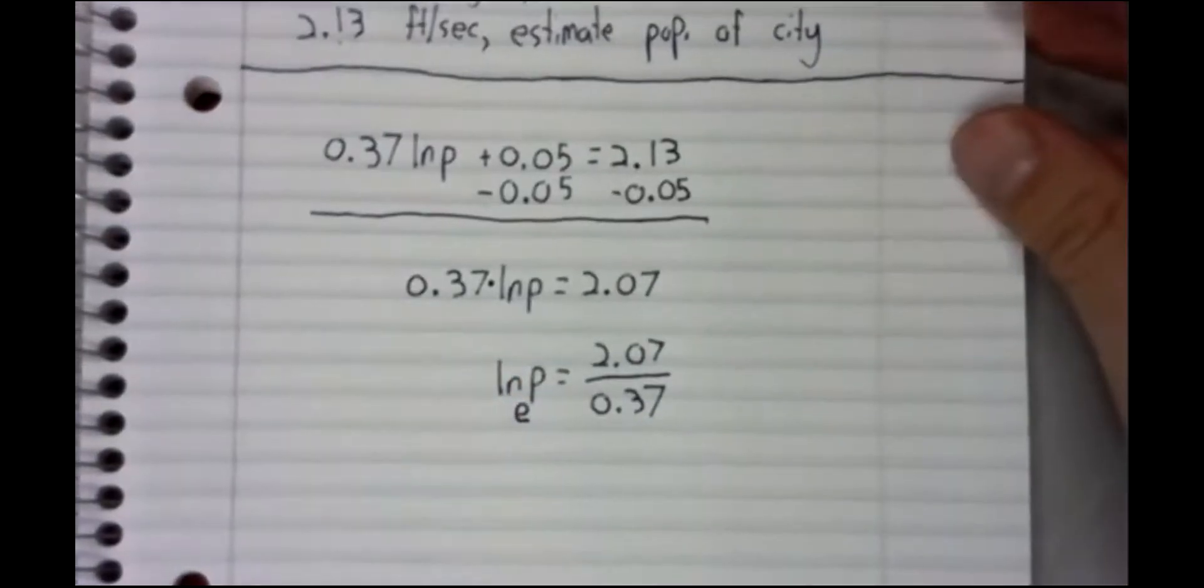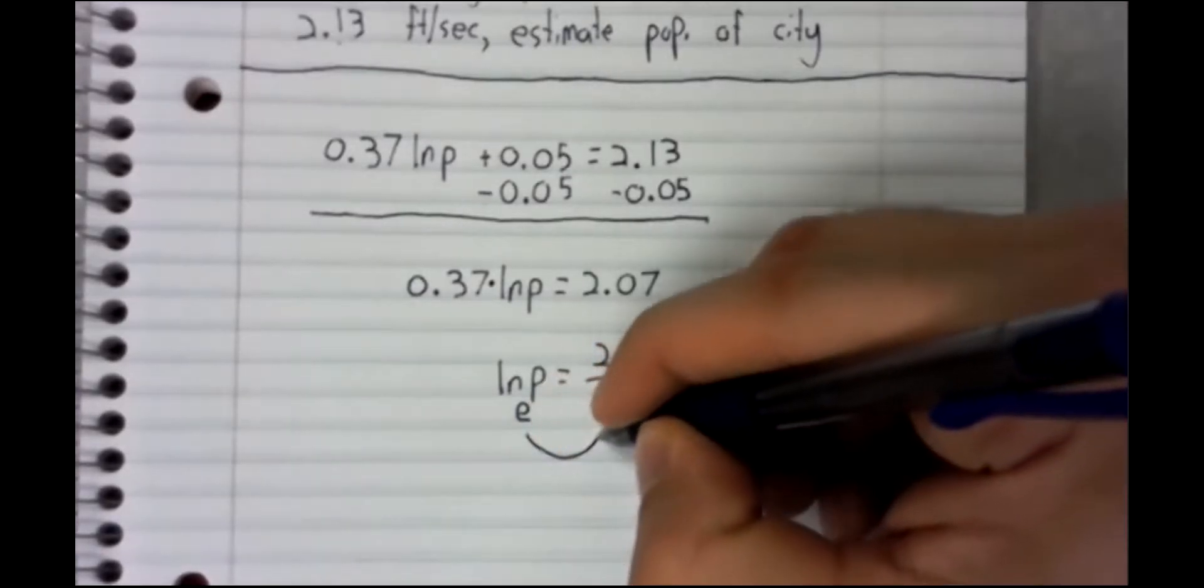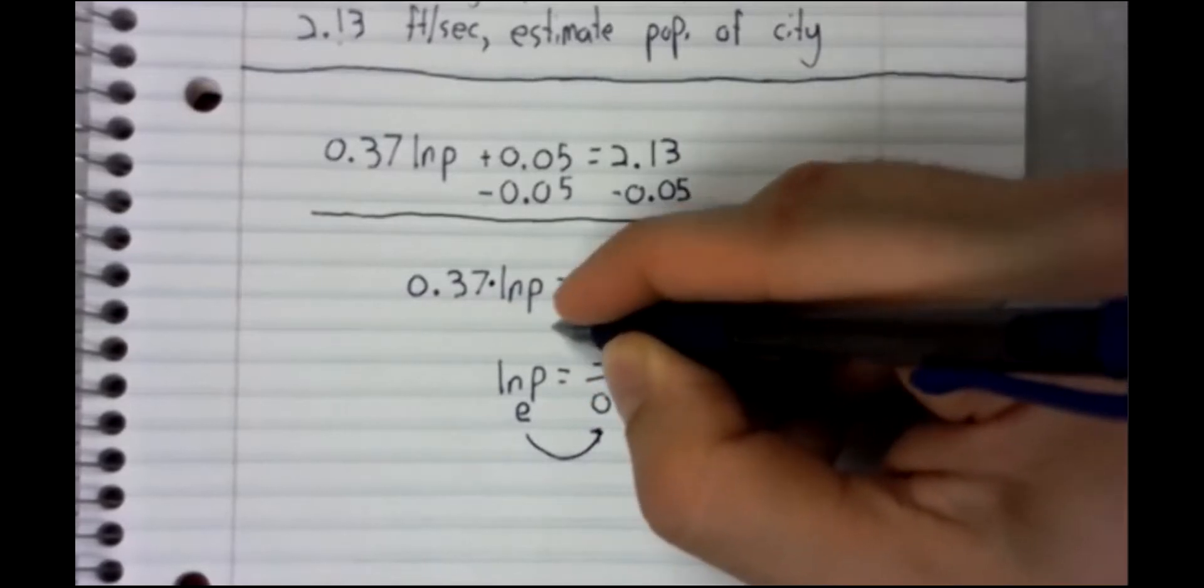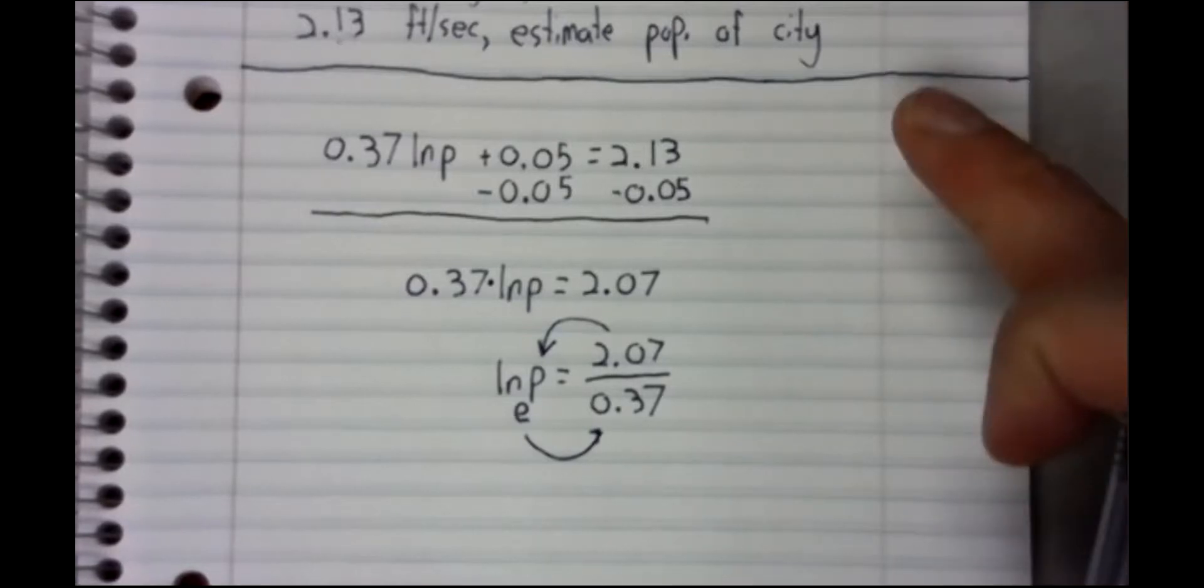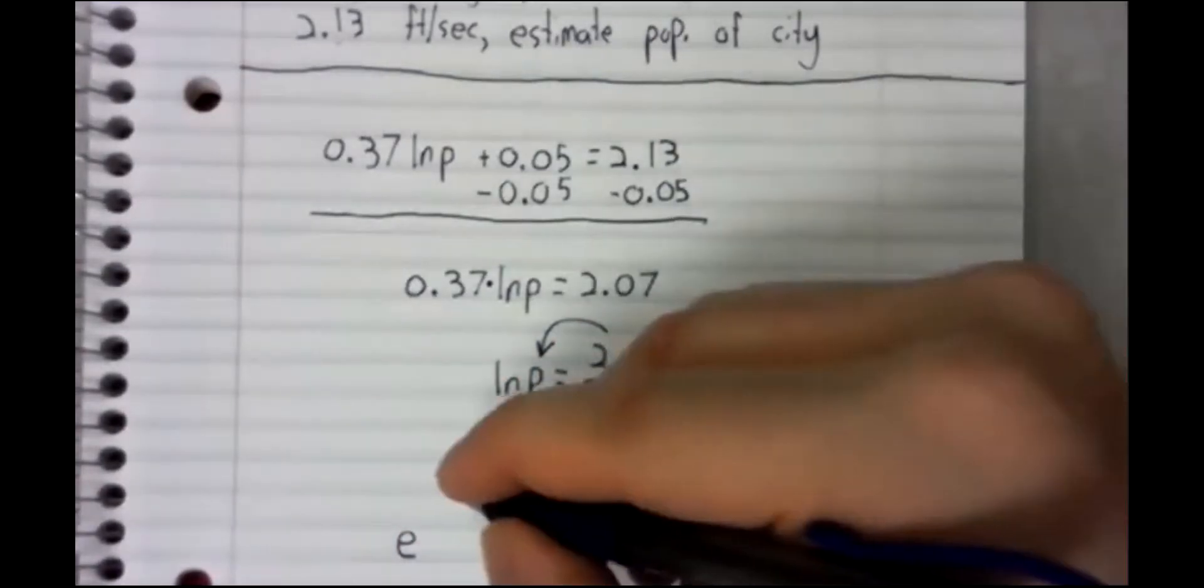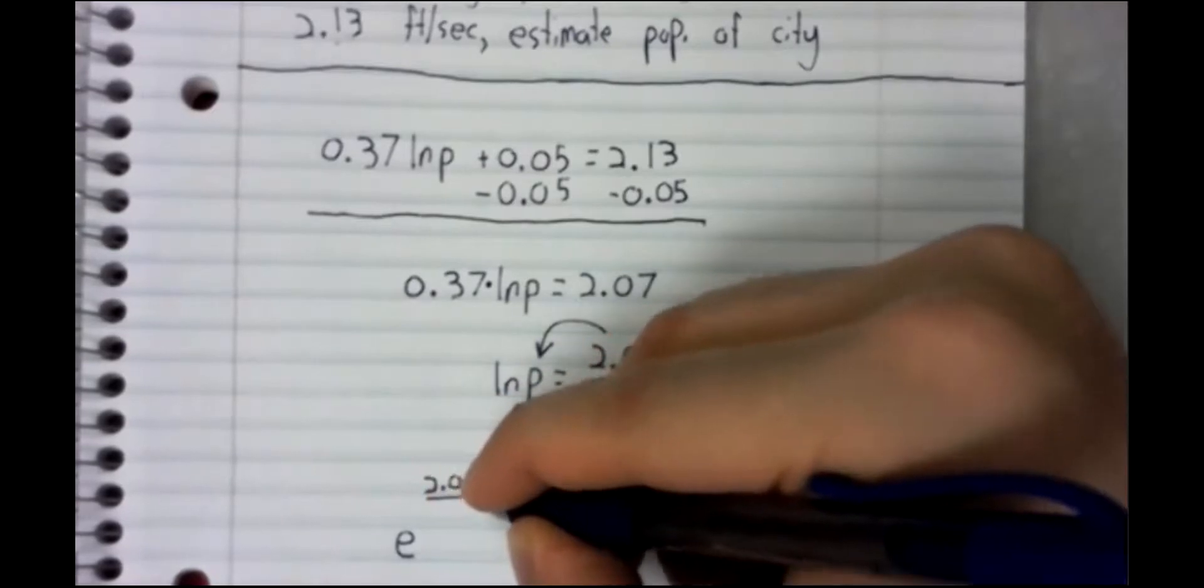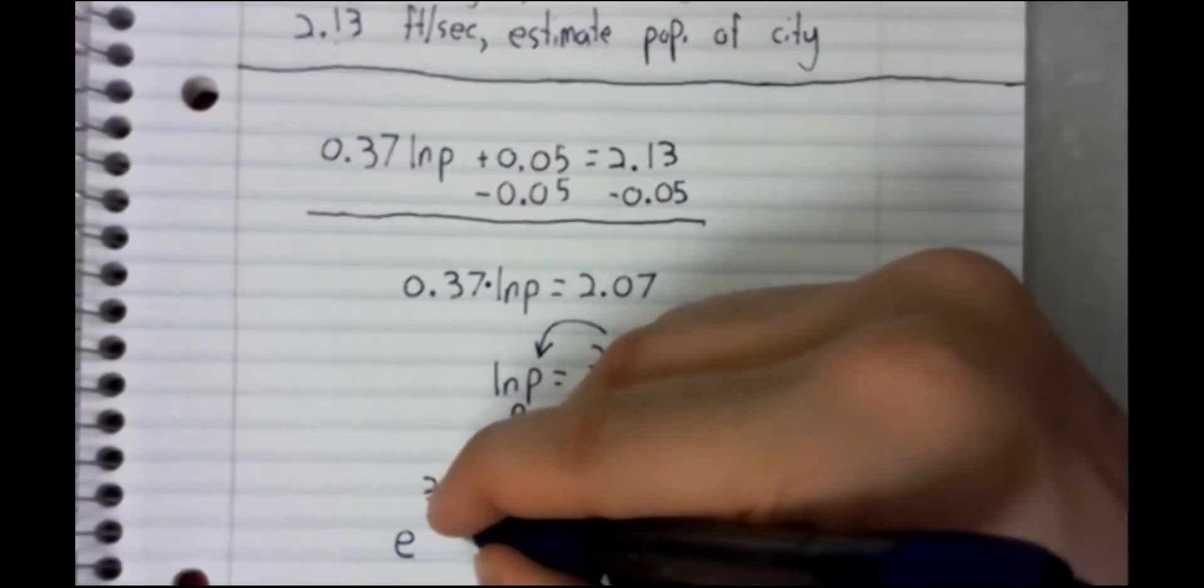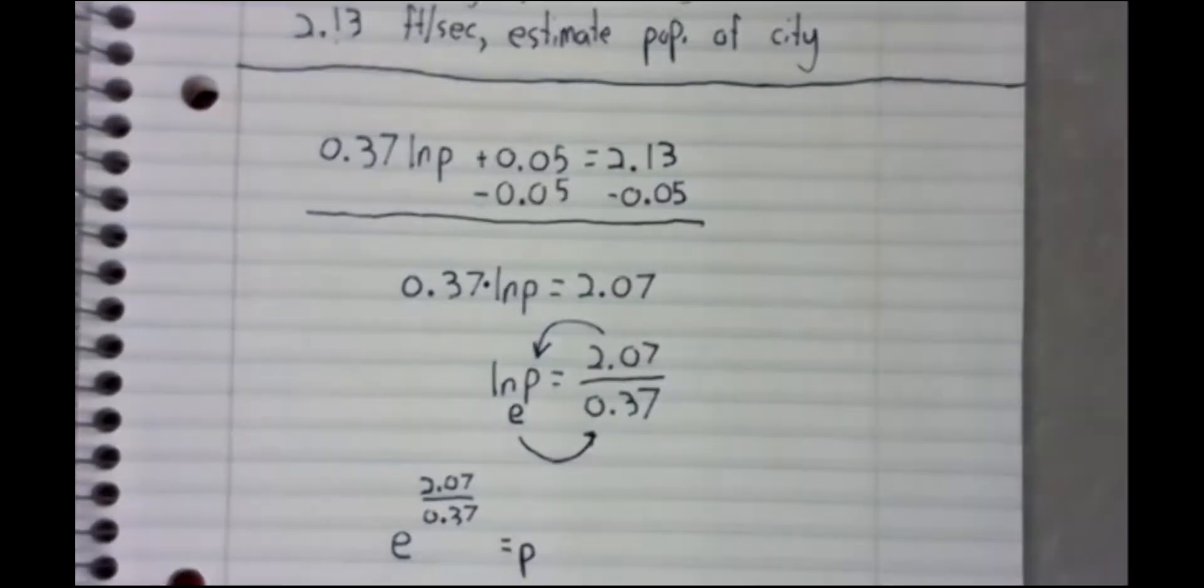And now I remember that the natural log is the logarithm base E. And I use the properties, the definition really, of the logarithm to rewrite this. This is the statement that E to the power of this fraction equals P.